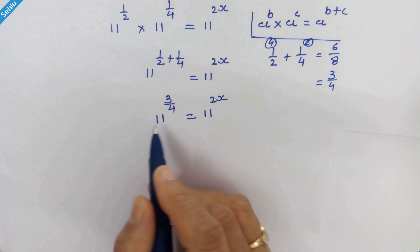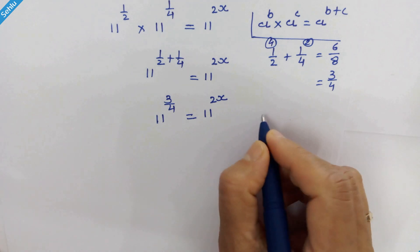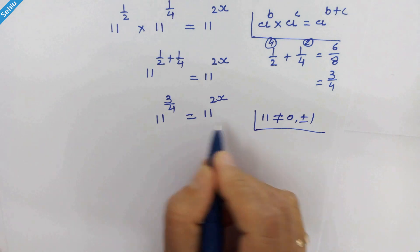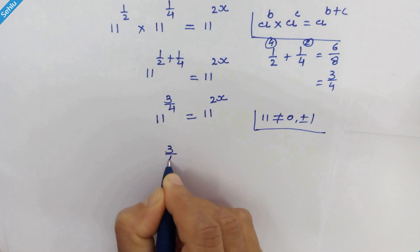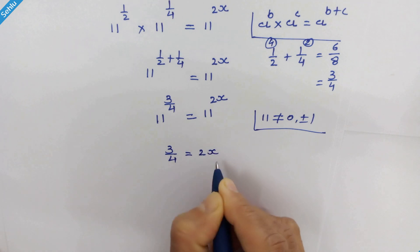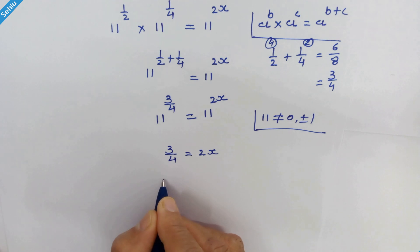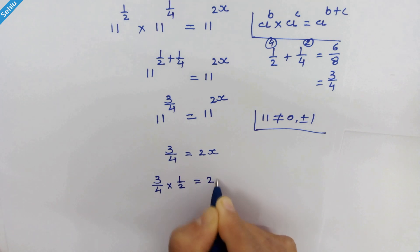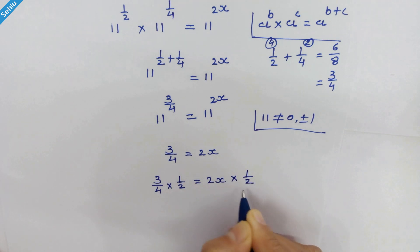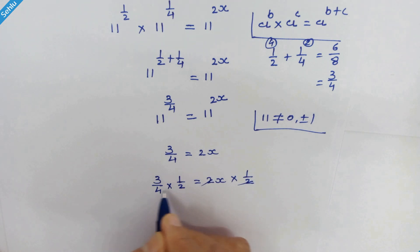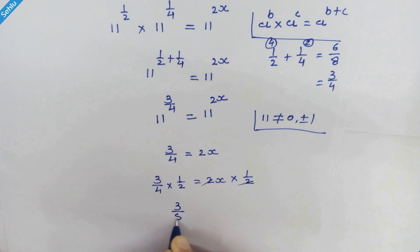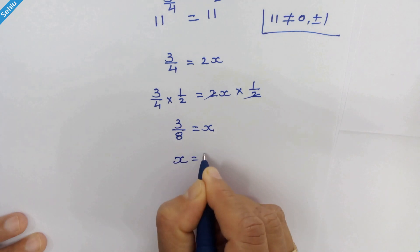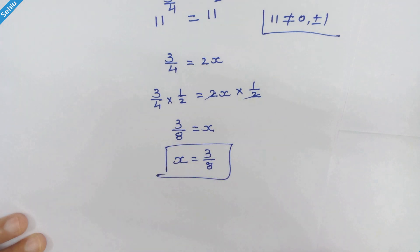Here we have 11 as the same base on both sides, and since 11 is not equal to 0 or plus or minus 1, we can equate the exponents: 3 upon 4 is equal to 2x. Multiplying both sides by 1 upon 2, these 2s cancel out, giving us x equals 3 upon 8.